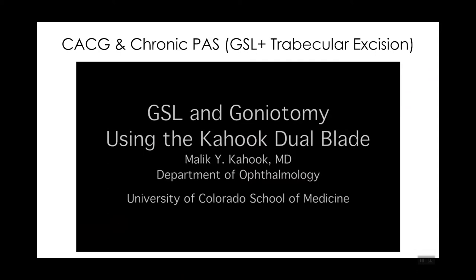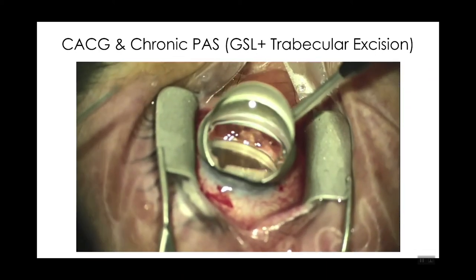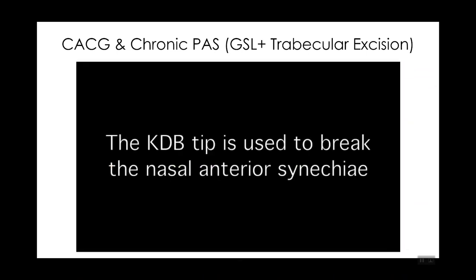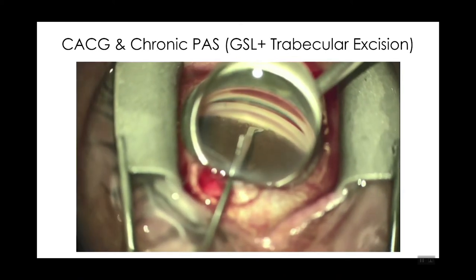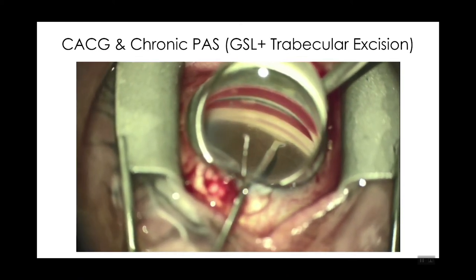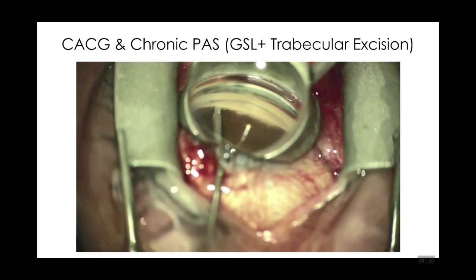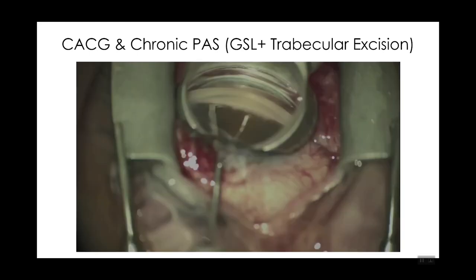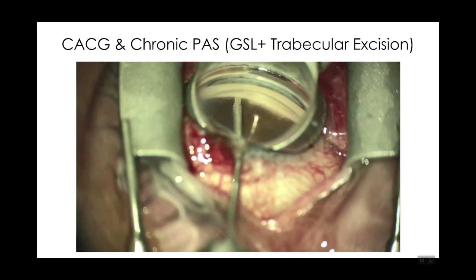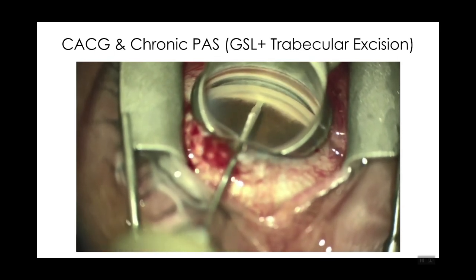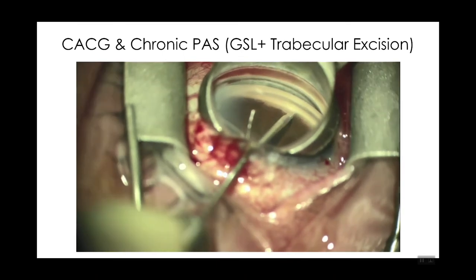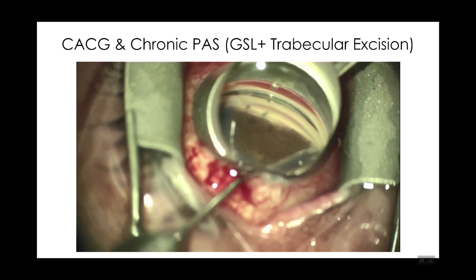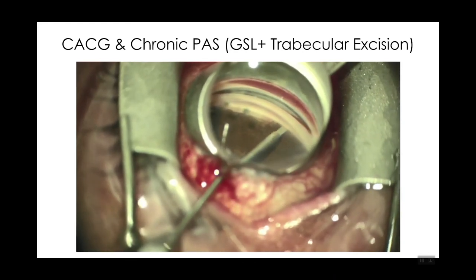Other techniques include using a blade designed at the University of Colorado called the Koch Dual Blade, or KDB. When the KDB is introduced into the anterior chamber, the tip hooks around the PAS and pulls it down away from the trabecular meshwork. You can also use the heel of the device to pad down the periphery of the iris. This also allows us to perform an excisional goniotomy in patients with chronic angle closure glaucoma — we found these patients are ideal for excisional goniotomy, allowing significant IOP lowering and reduction in medications.